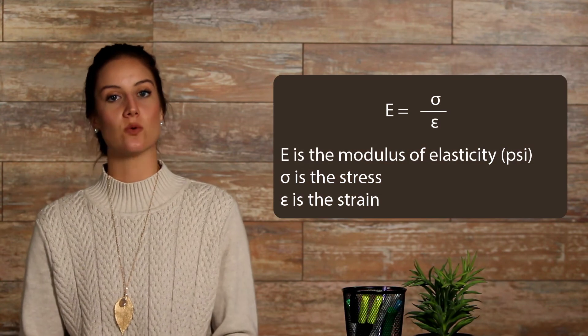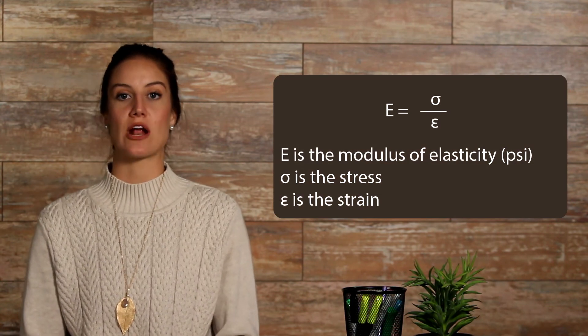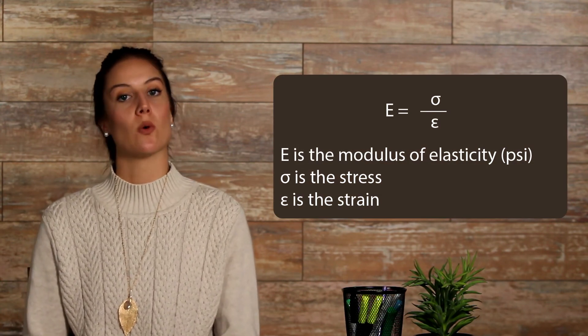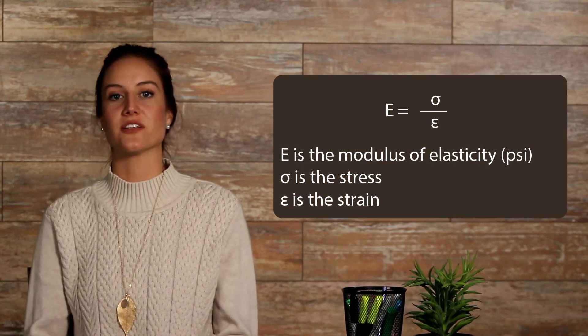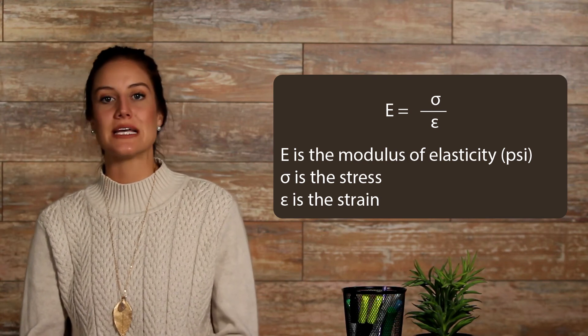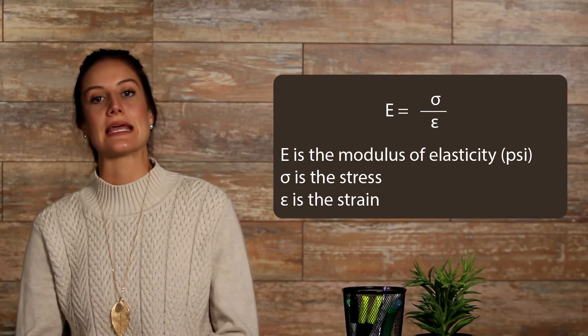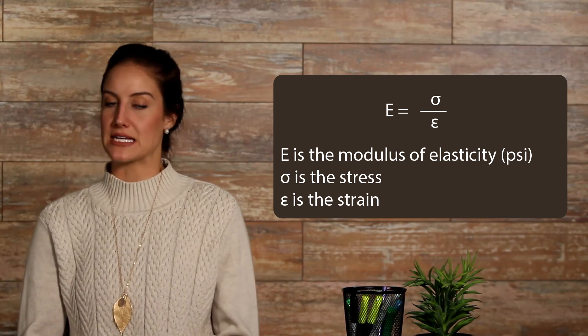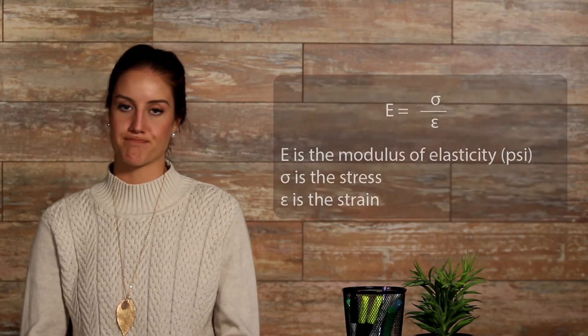Hooke's law states that stress and strain are directly proportional and equal to the modulus of elasticity: E equals sigma over epsilon, where E is the modulus of elasticity, sigma is the stress, and epsilon is the strain.